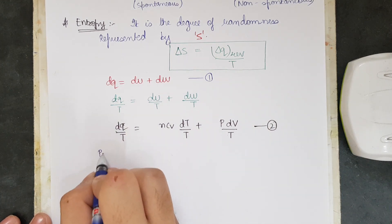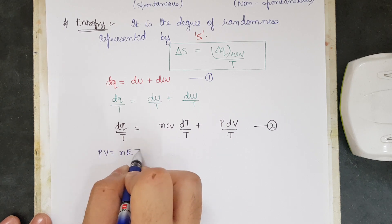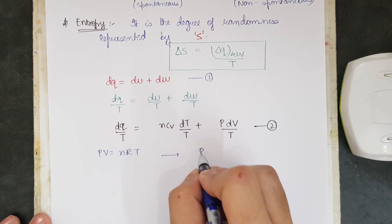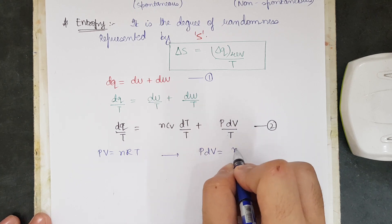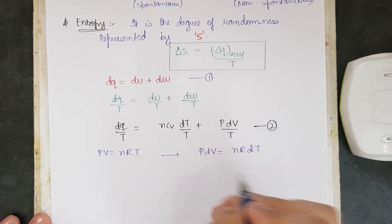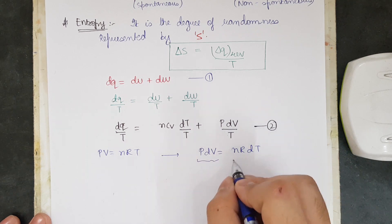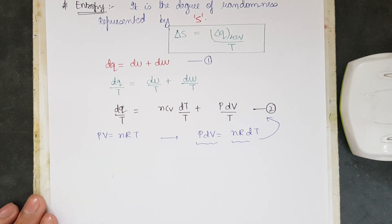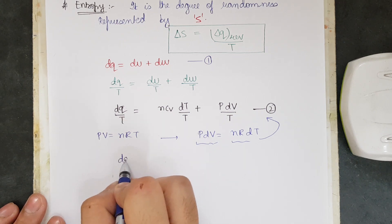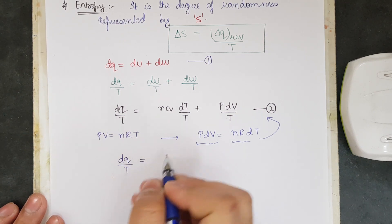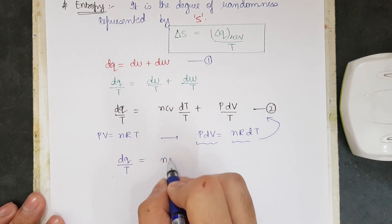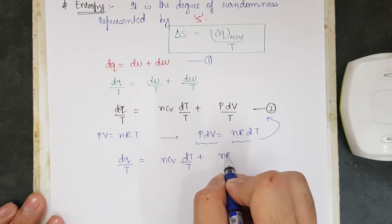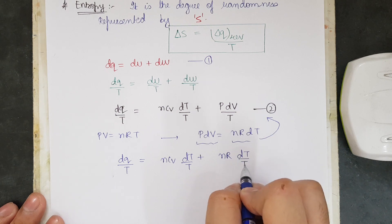So DQ/T can be written as NCV dT/T plus PDV/T — let us call this equation 2. We know that PV equals NRT, and differentiating both sides gives PDV equal to NR dT. Substituting this into equation 2, we get DQ/T equals NCV dT/T plus NR dT/T.